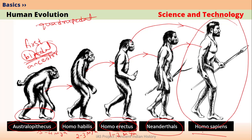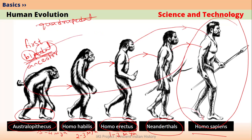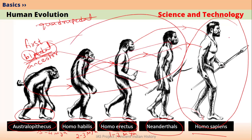This is important from a prelims point of view. First there was Australopithecus, which evolved into Homo habilis, then into Homo erectus, then into Neanderthal, and then into Homo sapiens. All these 4 ancestors are now extinct — they are not there. Only Homo sapiens, the true modern humans, remain. All these predecessors went extinct.